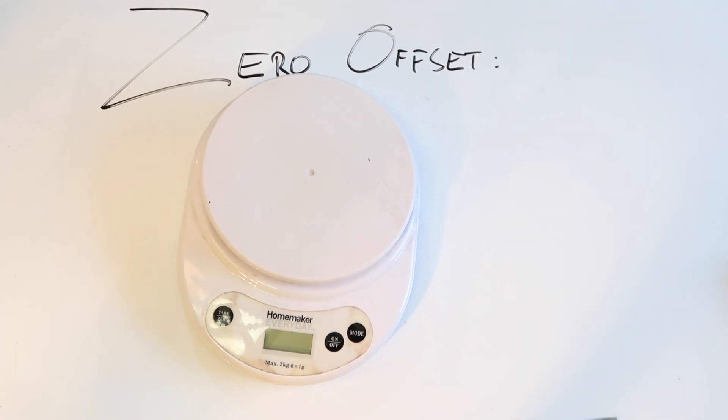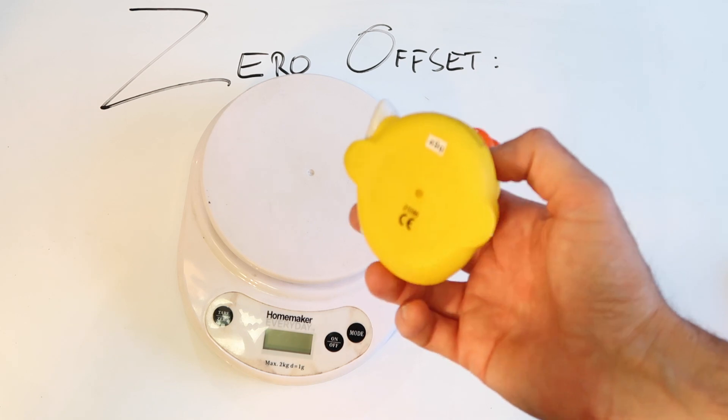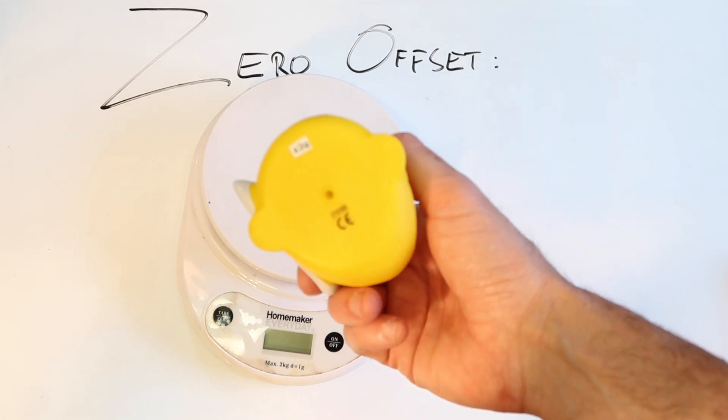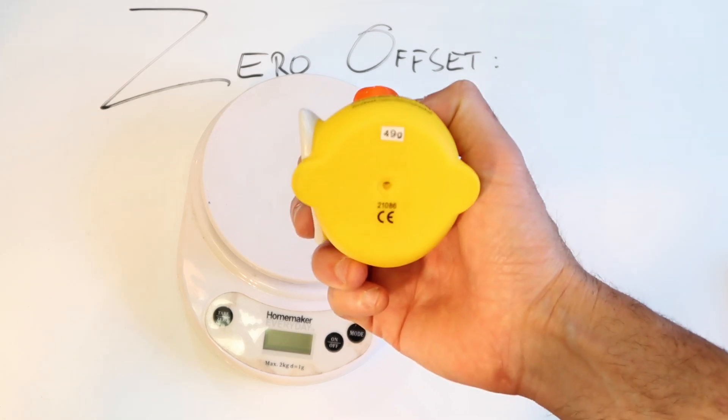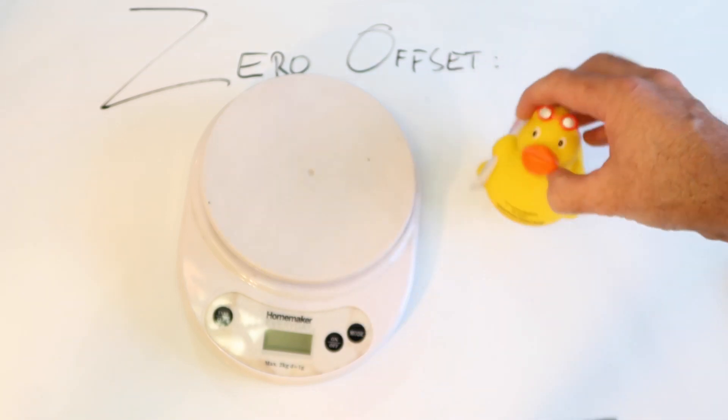So we have a set of pretty crusty kitchen scales, but that will do, and a rubber duck. Now the rubber duck has a known weight of 49 grams. How do I know that? Because I pre-weighed it and I've put a label on the bottom there: 49 gram rubber duck.